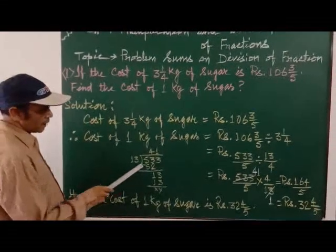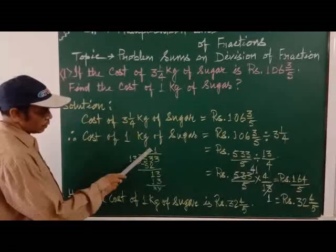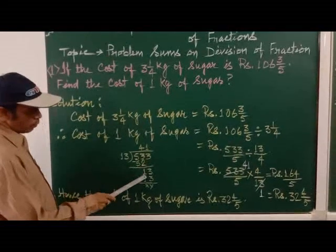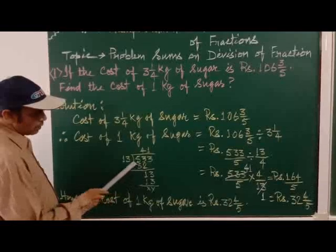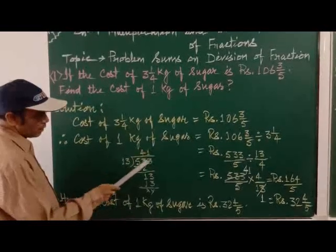So 533 divided by 13, so 13 4 is 52. Here you will get 1 and 3 will come down. 13, 1 here, 13. So we are getting 41.